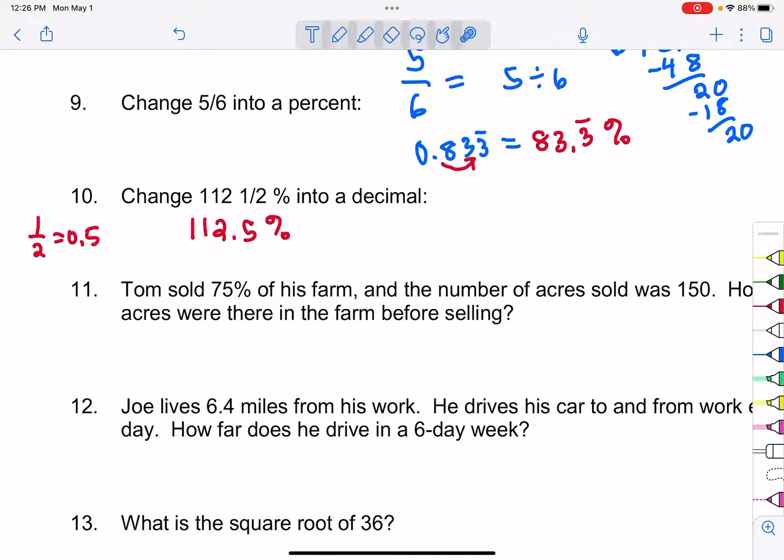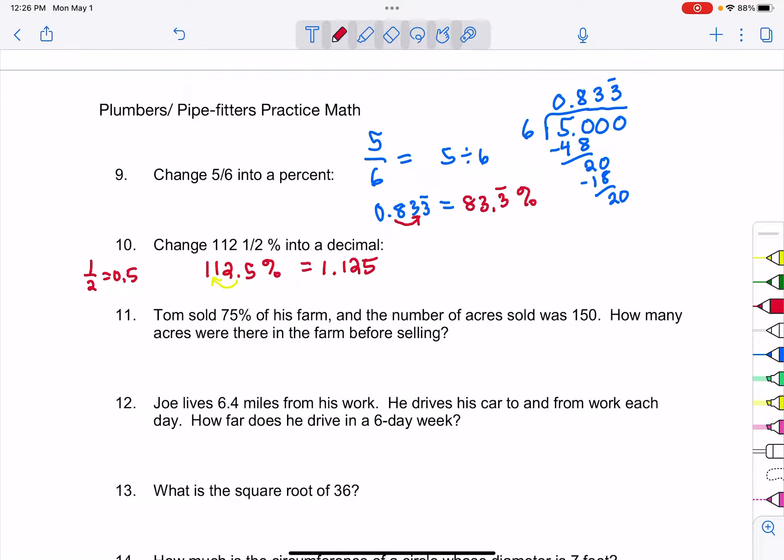If we want to change that into its decimal form, if we looked up here to change the decimal to a percent we move the decimal two places to the right, so to change a percent back into a decimal we're going to move the decimal back to where it belongs, two places to the left. So if we move that two places to the left we get 1.125. So there is how to change a percent into a decimal.